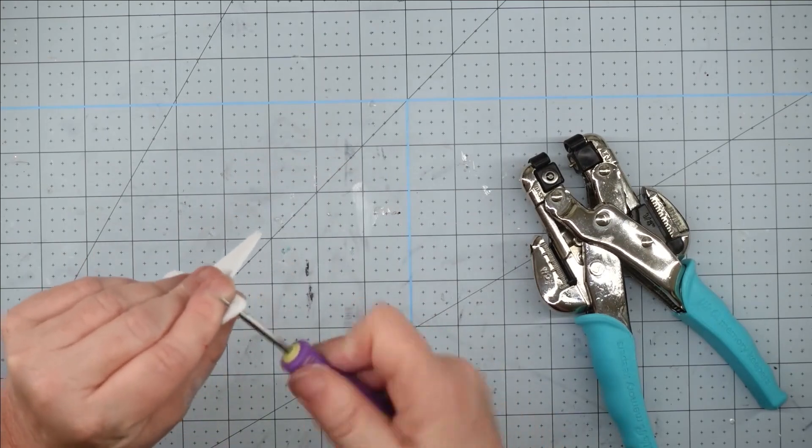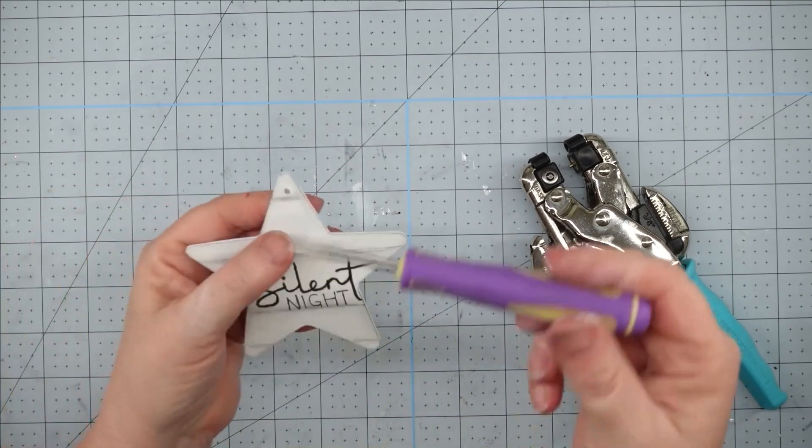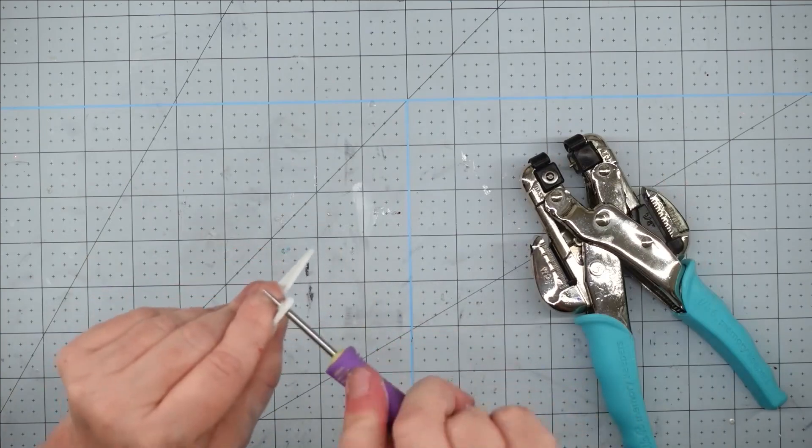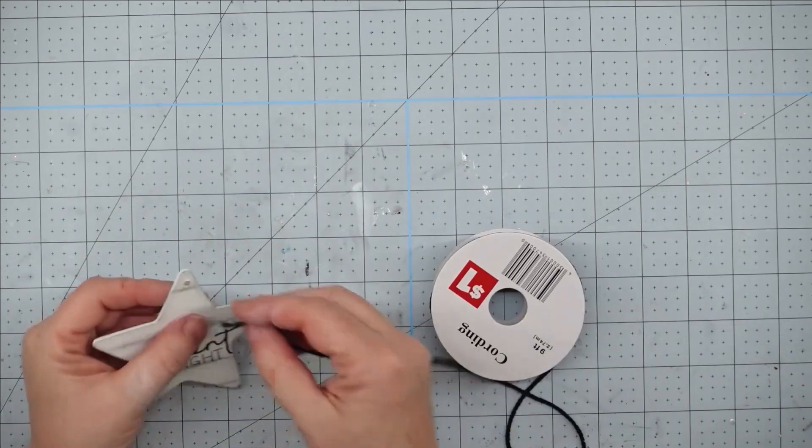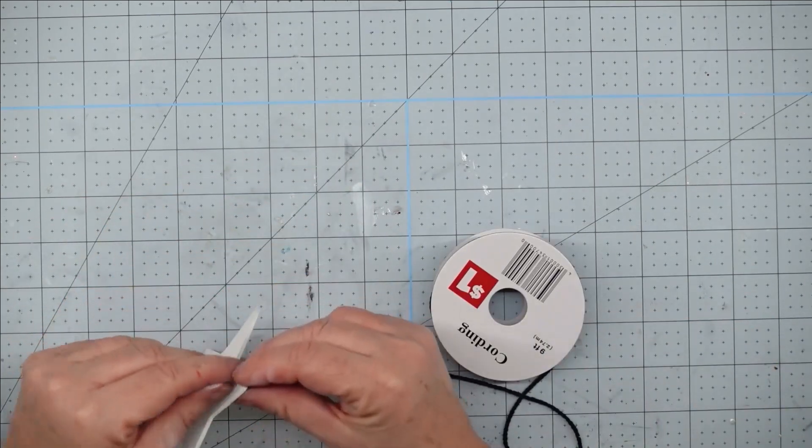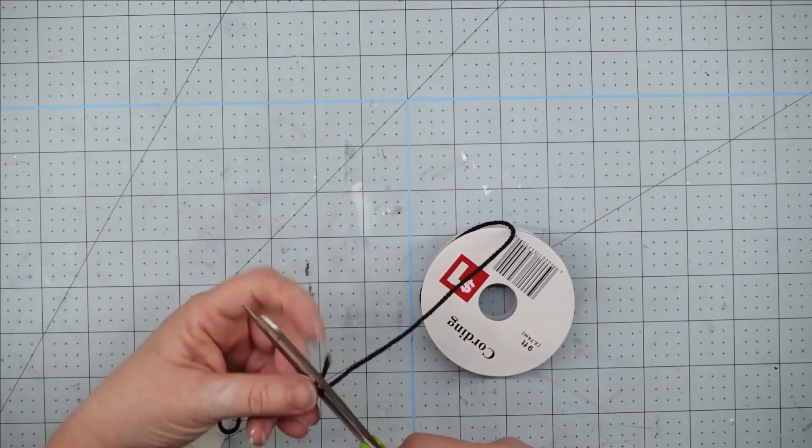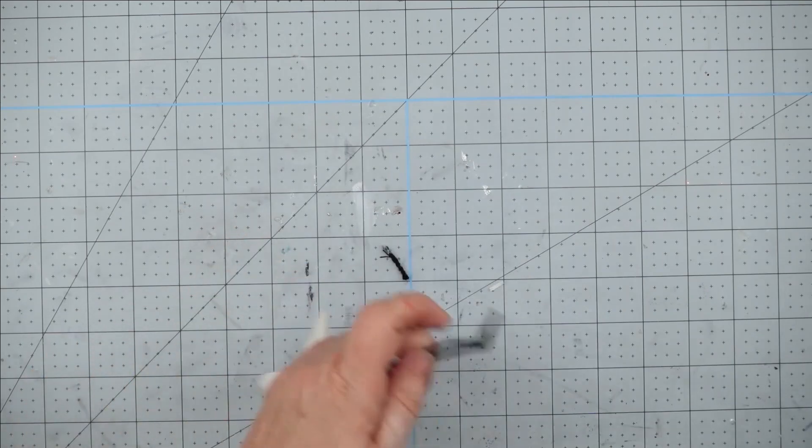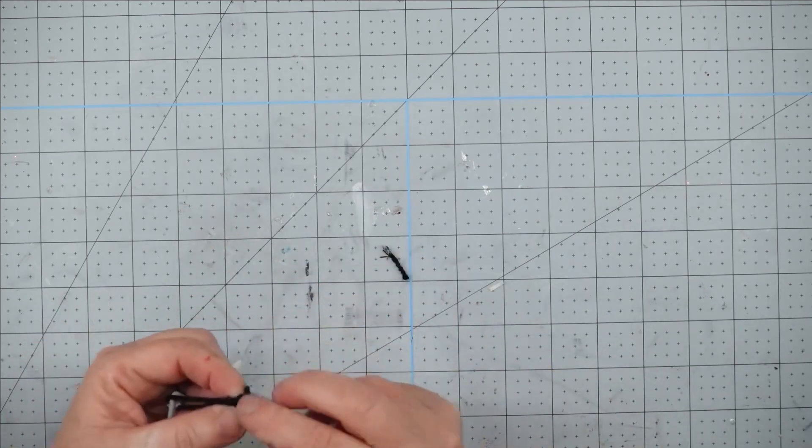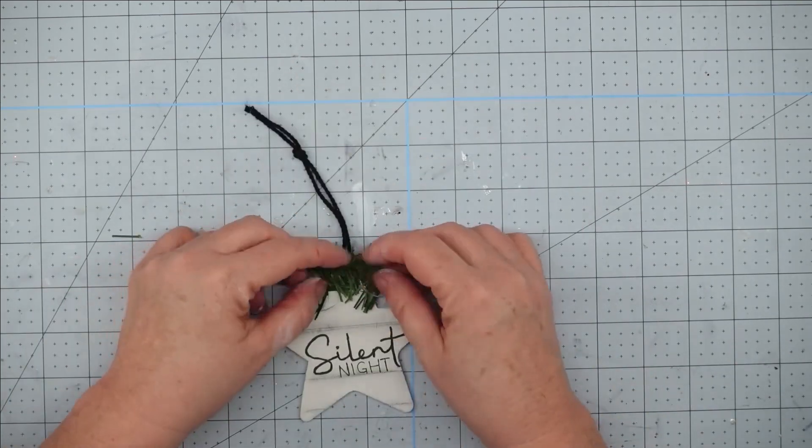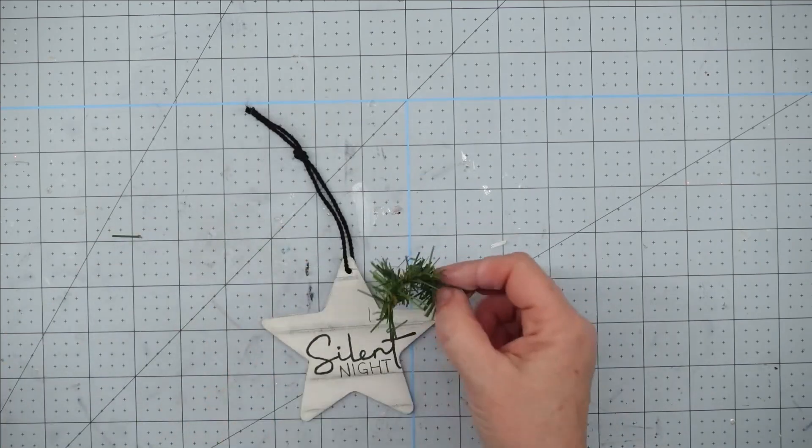To make a hole in this to make a hanger, I used my awl that I got from Hobby Lobby. You can get these for like two dollars and fifty cents, but you could also just use a hole punch. Once I got a hole in the top, I pushed my cording through. I'm going to trim it off and then I tie a knot in the top, and this is going to give me a loop for hanging.